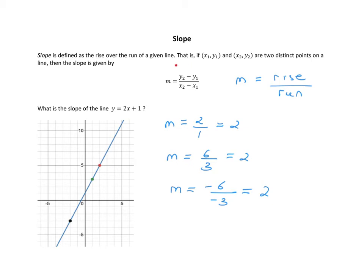One last thing I like to do is actually use this formula to figure out the slope, even though we already know what it is, just to get some practice with it. To do this, you need to pick two points and then plug that information into this formula. I'll use this point and this point. This point here is negative 2, negative 3. And then this point here is 2, 5. Once you pick your two points, this is the first one, so this is my x1 and y1, and therefore my other point is x2, y2.